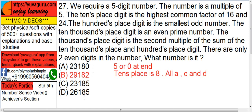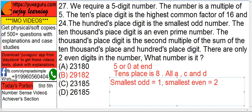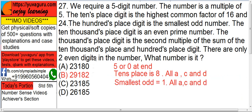So no use of this condition. Next condition: The hundred's place digit is the smallest odd number. Which is the smallest odd? 1. And which is the smallest even? 2. We require 1. Check 1 in the hundred's place. Again it is common to all: A, C and D.